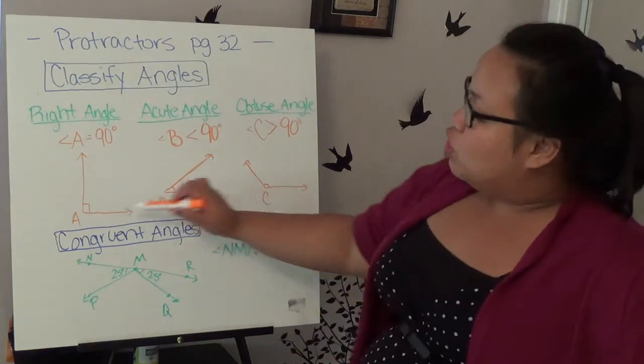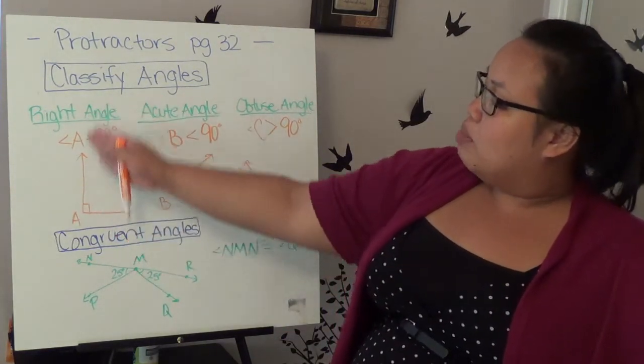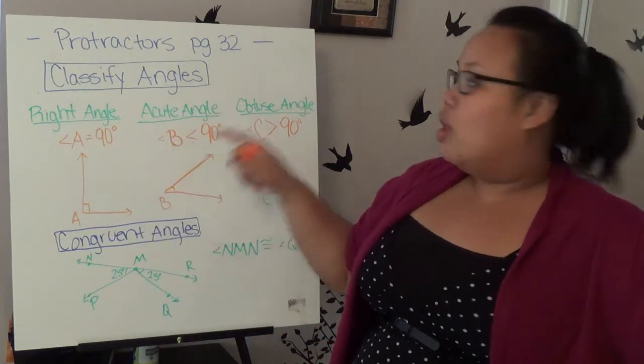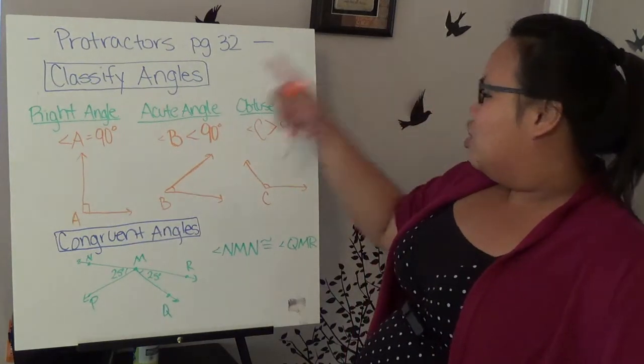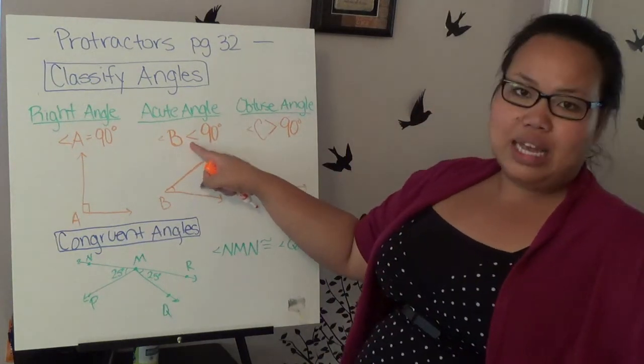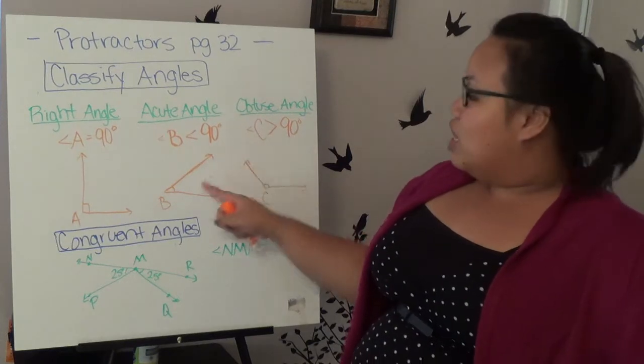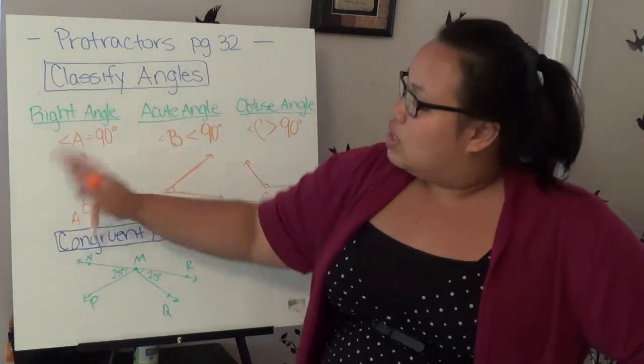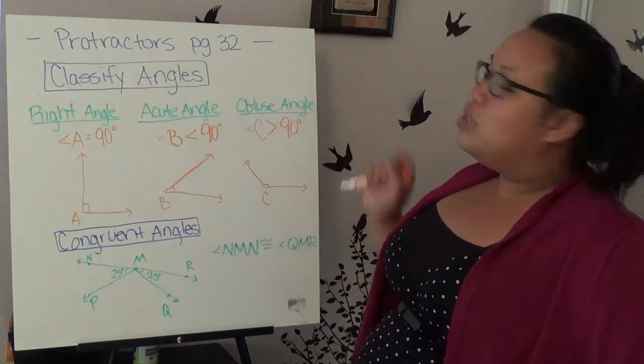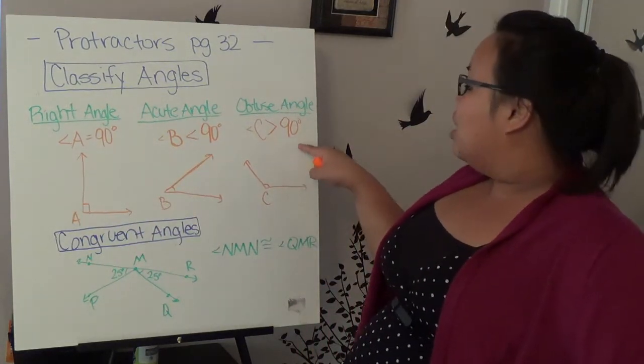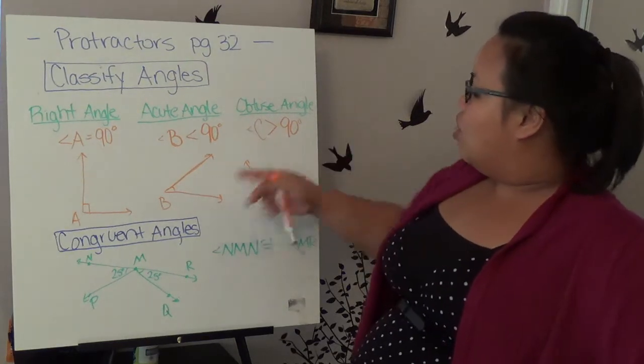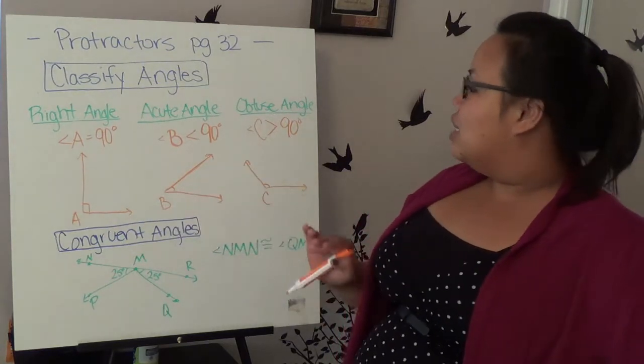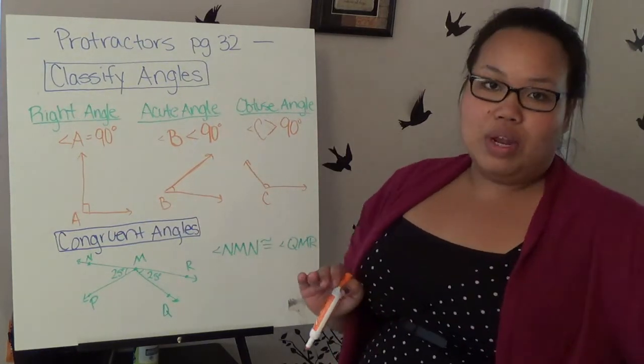For example, if it goes straight up, this number right here would be 90. A 90 degree angle is considered a right angle. The acute angle means that it's less than 90 degrees. Anything that goes this way is an obtuse angle. So anything bigger than 90 degrees is called obtuse.